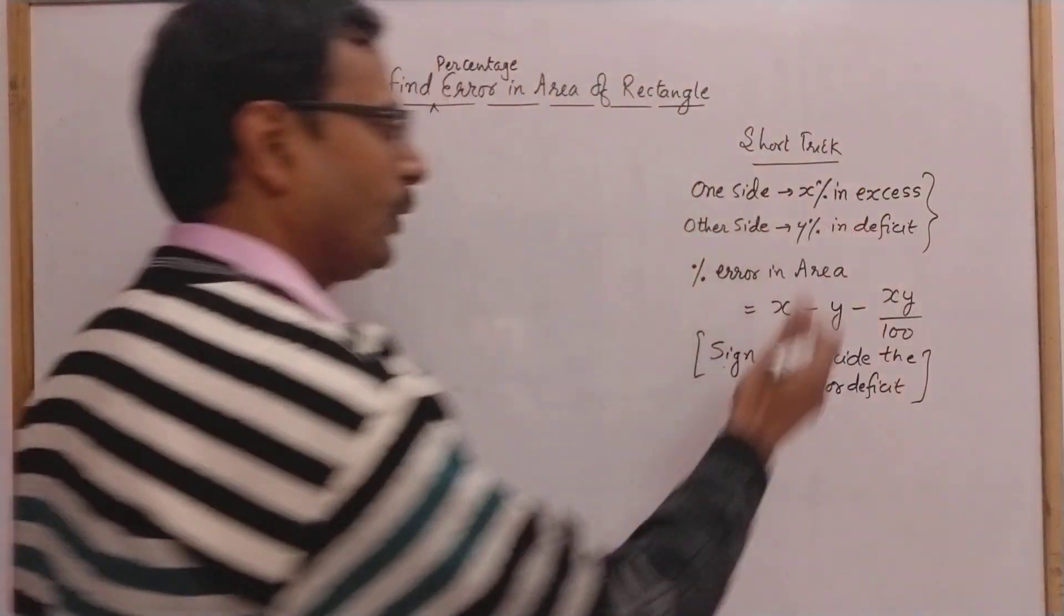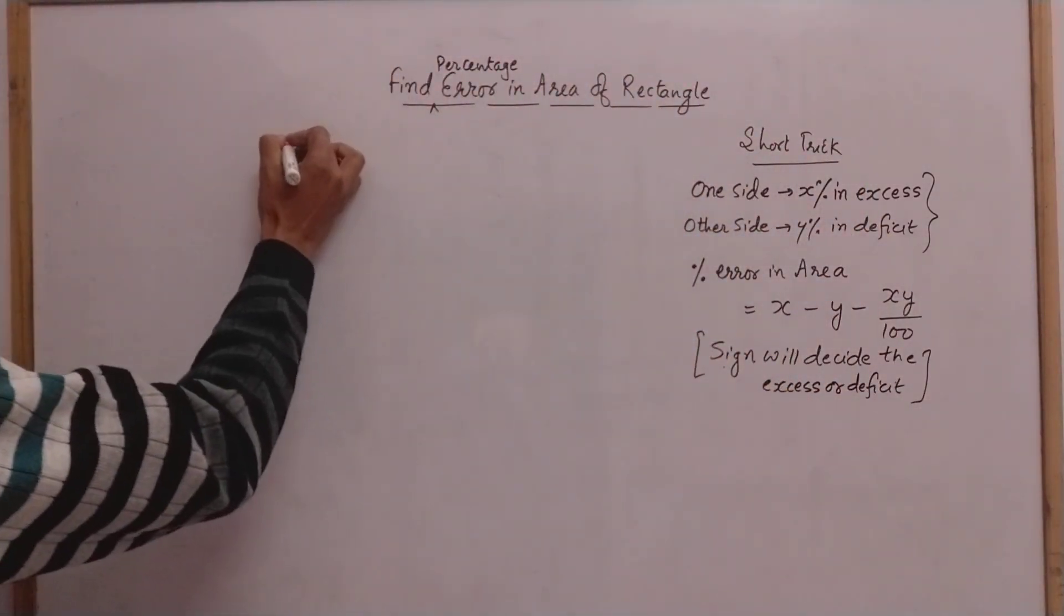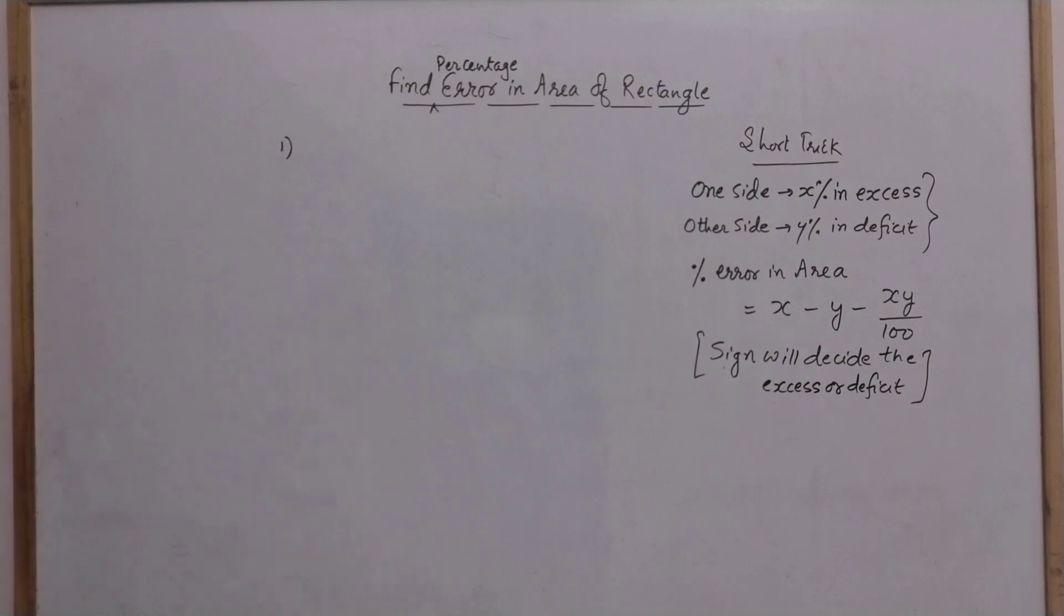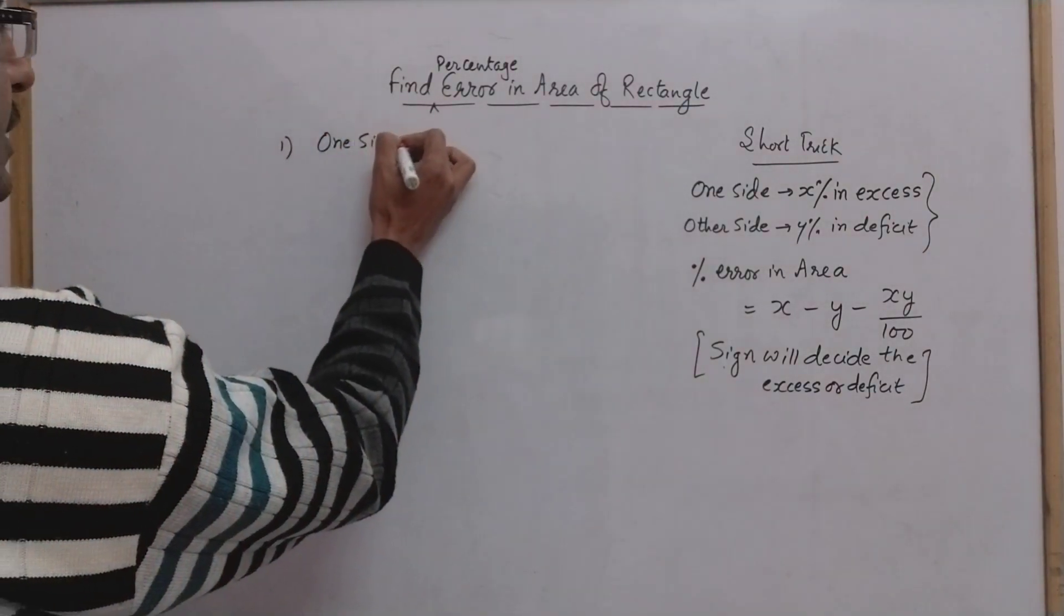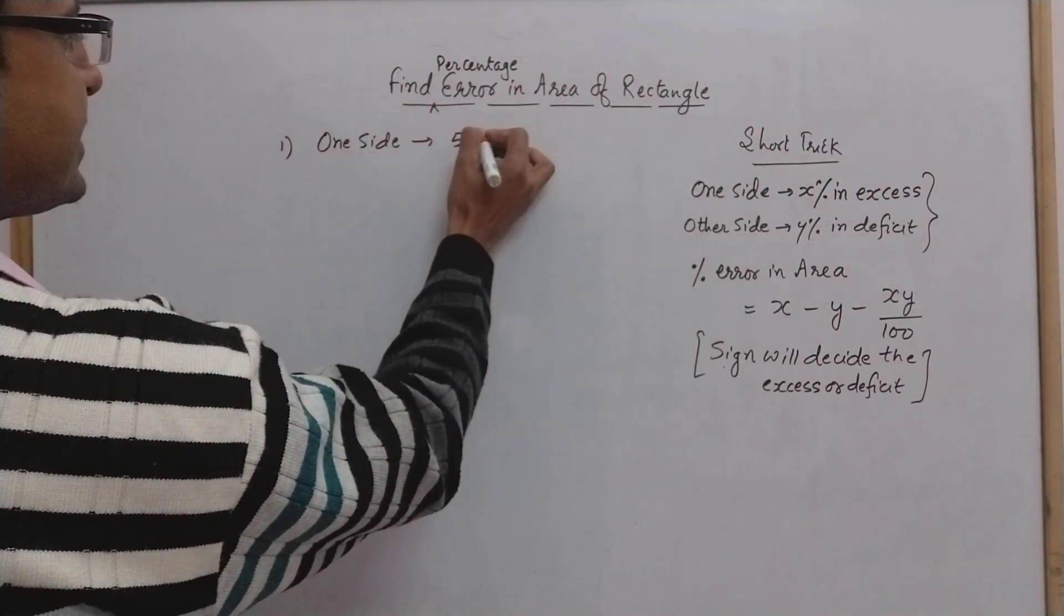Let us see how this trick can be applied to solve some questions. The first question will be a very simple one because we need to understand the concept. In this question, one side is taken 5 percent in excess.